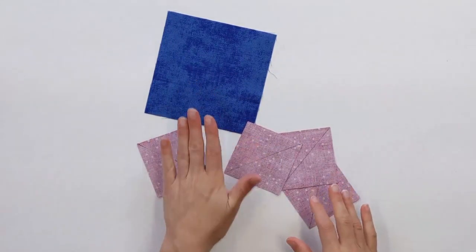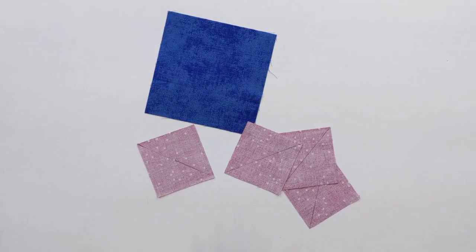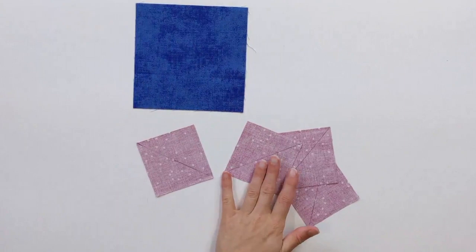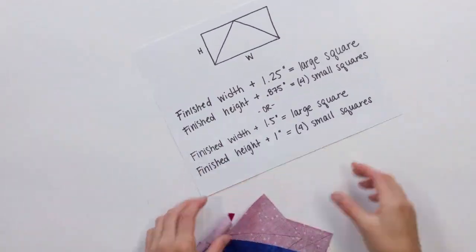So how do you know what size you need? It's a really nice handy dandy formula. If you're using any pattern out there on the market that asks you to make four at a time flying geese, they will have automatically done the math for you and told you what size to cut your squares. If you want to make flying geese for a different project, here's the formula that you'll need.